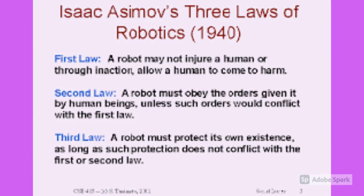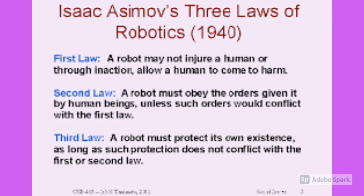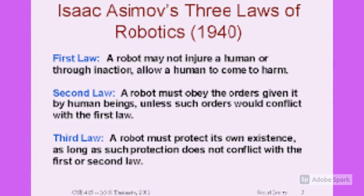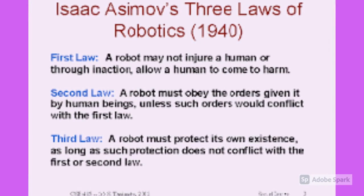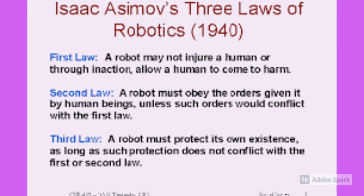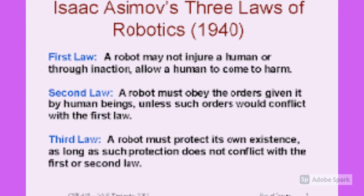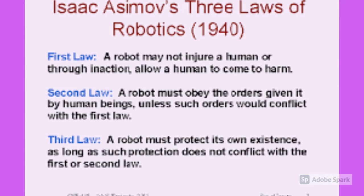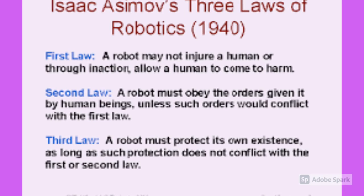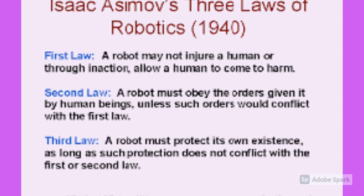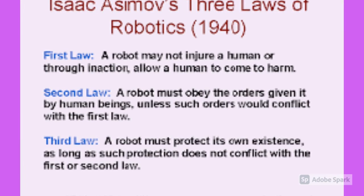The three laws of robotics are: First law — a robot may not injure a human, or through inaction allow a human to come to harm. Second law — a robot must obey the orders given to it by human beings. Third law — a robot must protect its own existence as long as it does not conflict with the first and the second law.